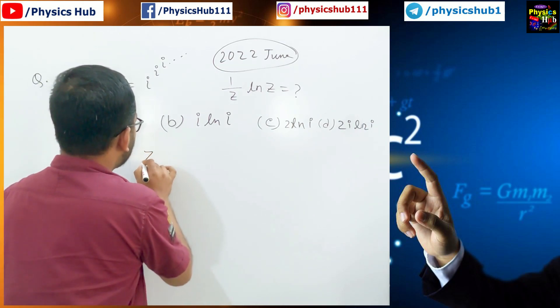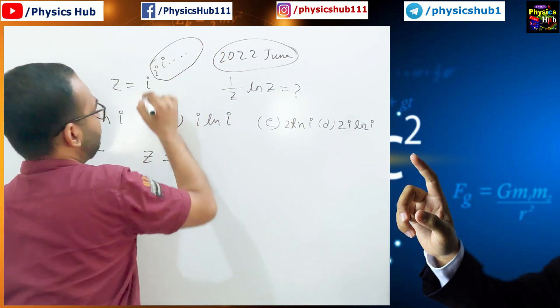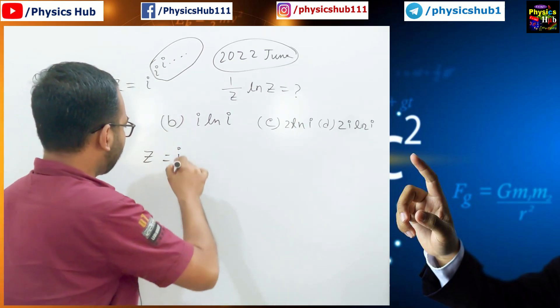You can see z equals i to the power of all of these things, which is also basically z. So you can write i to the power z.